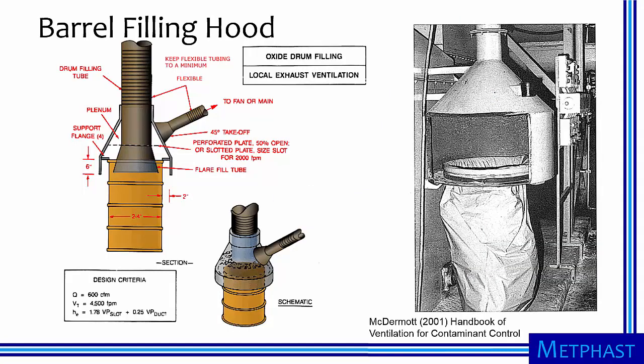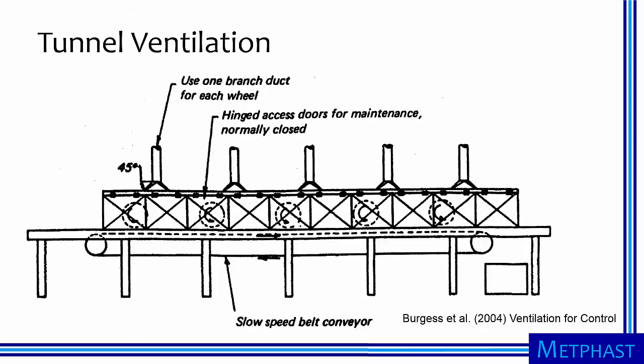There are numerous other examples of enclosing hoods. Here, a hood specifically designed for barrel filling is shown. When material such as a powder is dropped into a barrel, it displaces air in the barrel. If the material is dusty, the displaced air will contain many particles, and the barrel filling hood captures this particle-laden air before it enters the workplace. Another example is a ventilated tunnel, which fully encloses a dusty process such as grinding as parts move along a conveyor belt. The tunnel helps reduce the volume of air required to ventilate this type of process.